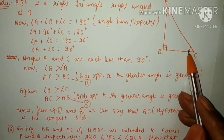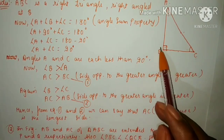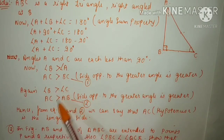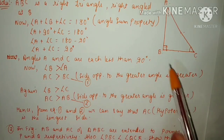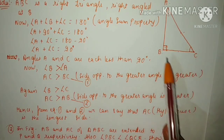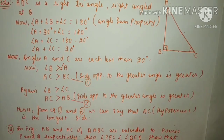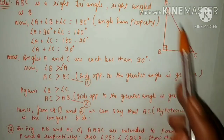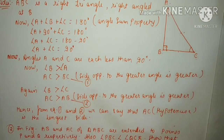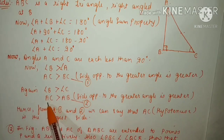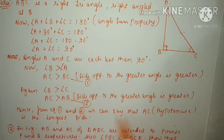Now angle C is also less than 90 degrees and angle B equals 90 degrees, so angle B is also greater than angle C. If angle B is greater than angle C, then the side opposite to angle B will be greater than the side opposite to angle C. Side opposite to angle B is AC, and side opposite to angle C is AB. So AC is greater than AB. The reason: side opposite to greater angle is greater. Name this as equation number 2.